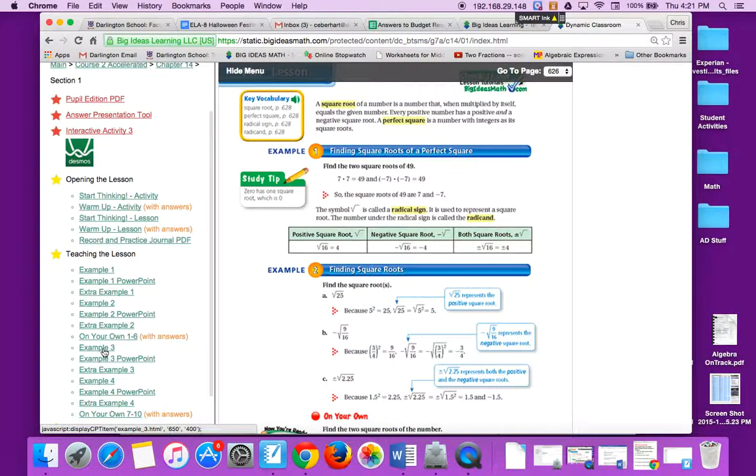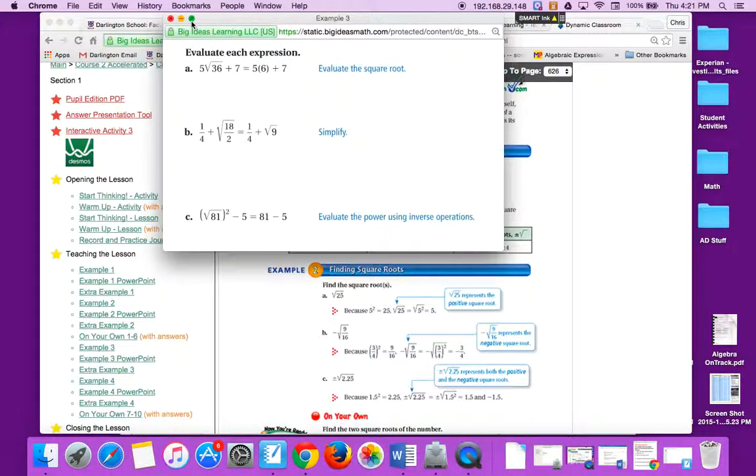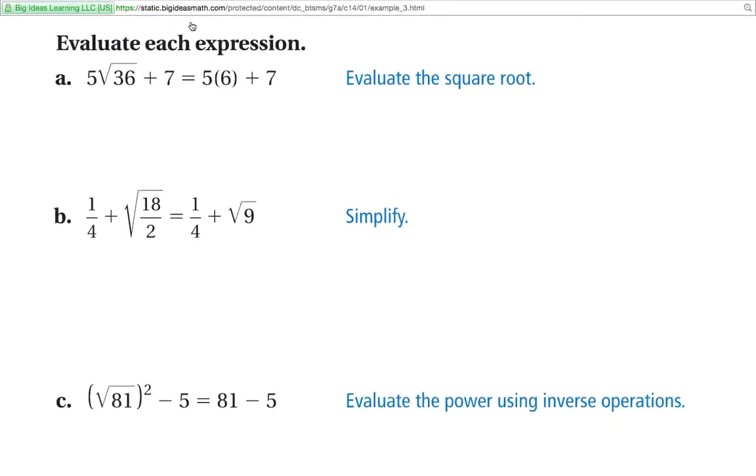The next one, example 3, involves doing some math. Just so you understand, square roots are technically exponents. They are actually exponents that are raised to the 1.5 power. So when you're doing order of operations, you're going to do them when you're normally doing the E part of PEMDAS. So in this case, square root of 36 is done first. That's 6. Then 5 times 6, 30. Ends up giving you 37.